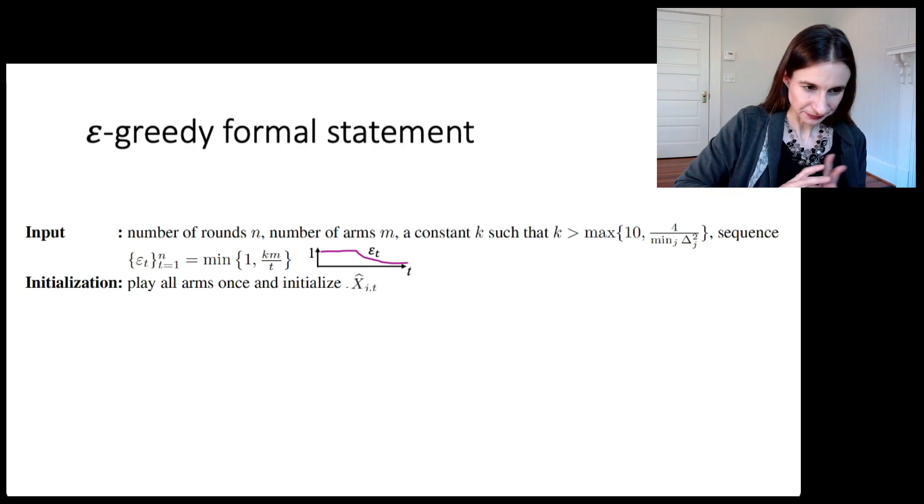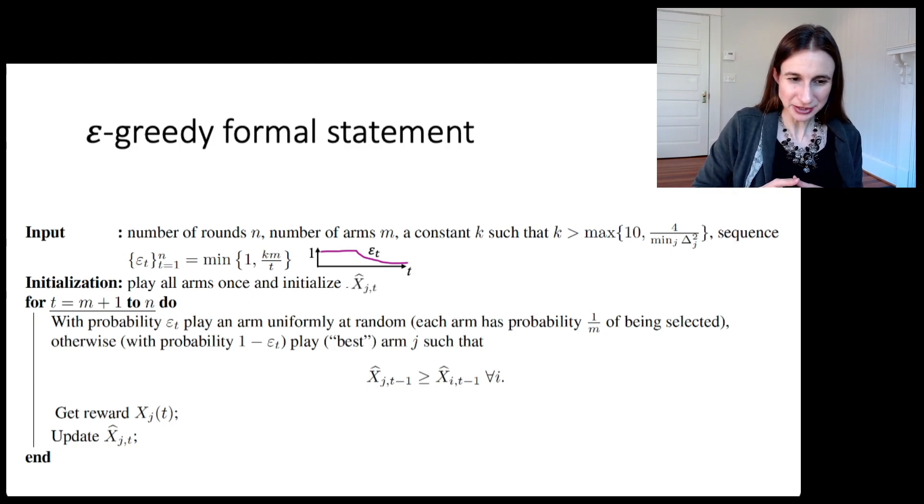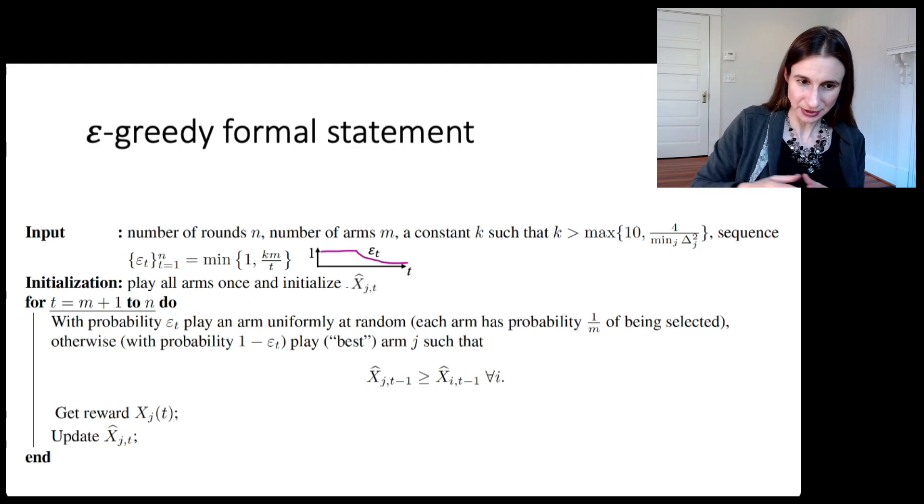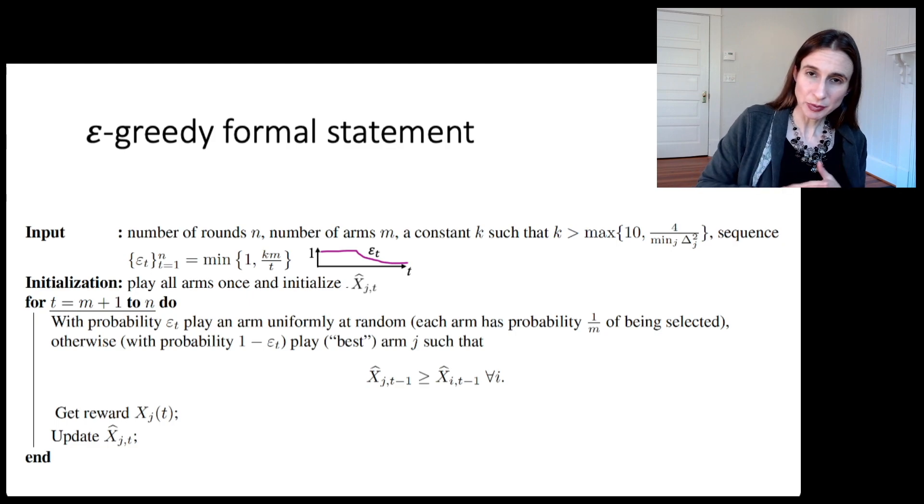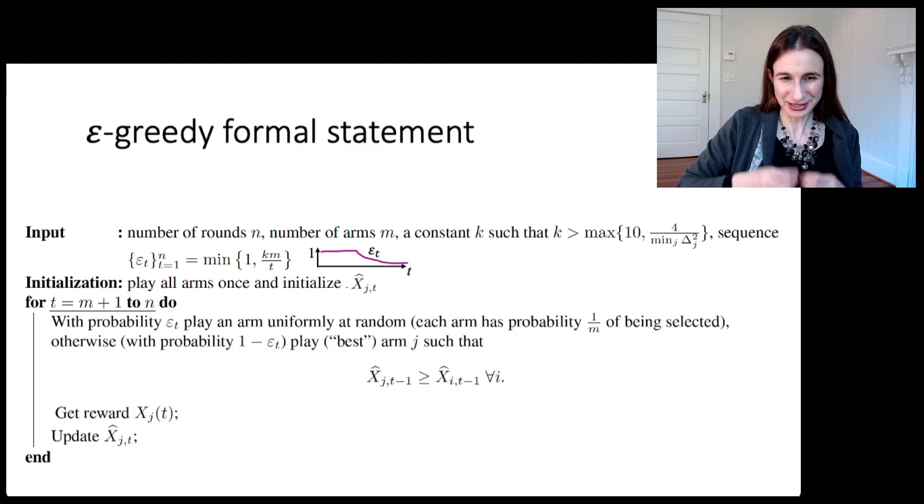So we initialize by playing all the arms once, initializing our estimates of the mean reward. And then for the remainder of the time with probability epsilon_T, we play an arm uniformly at random. So exploring, each arm has probability one over M of being selected because M is the number of arms. And then otherwise with probability one minus epsilon_T, we exploit, we choose the arm which has the best estimated mean reward.